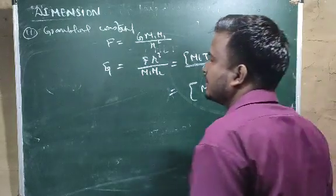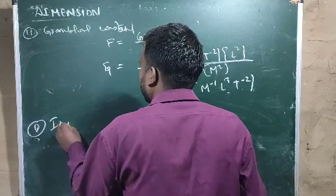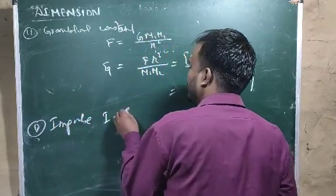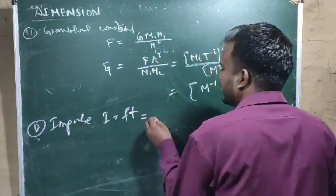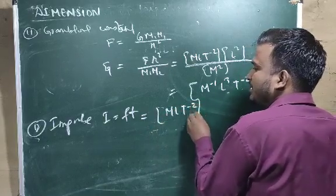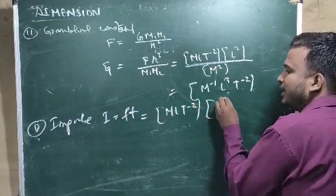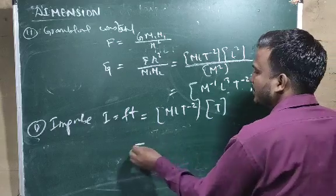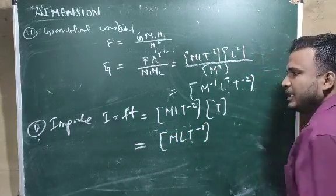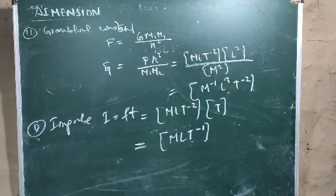Number 12 is impulse. The formula for impulse is I = F × T. The dimensional formula for force is M L T⁻² and for time is T, so the result will be M L T⁻¹. This is the dimensional formula for impulse.